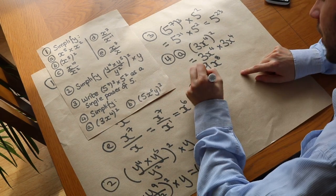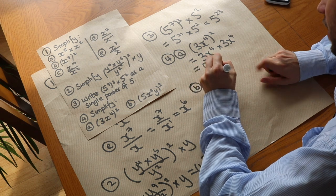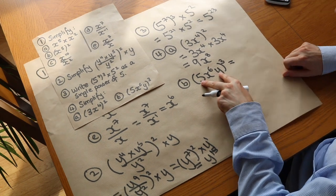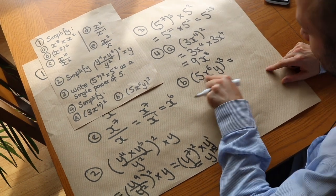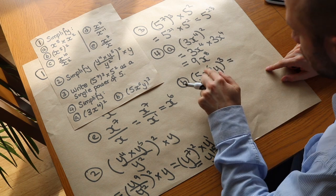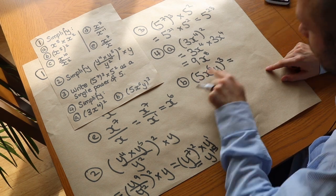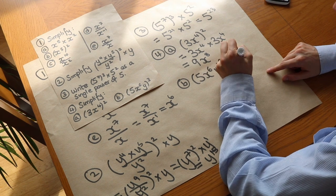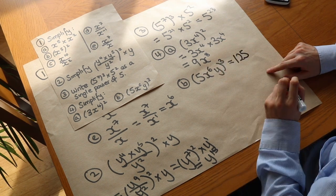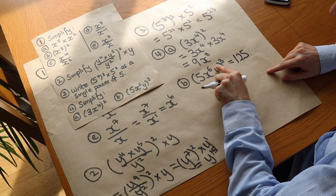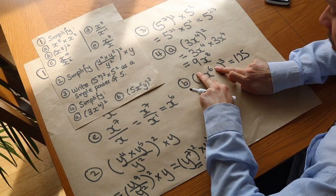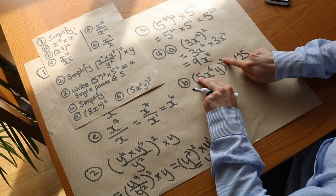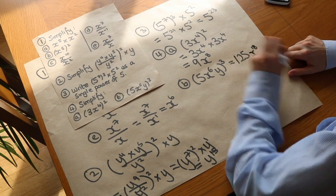For the second part, we've got five x to the six y cubed, all cubed. When you have a single term to a power you can apply that power to each thing within the term. So we've got five cubed — which is one hundred and twenty-five — times x to the six to the three. Imagining the other things aren't there: x to the six to the power of three, we multiply the powers together to get x to the eighteen.